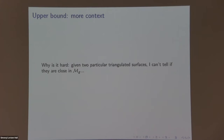Let me explain the main obstruction to proving any upper bound. Even now, if you give me two particular triangulations and ask me whether they are close in moduli space, I don't know the answer. This is similar to asking: if you have the combinatorial data associated to a Belyi map, can you tell if the underlying three-one surface is the same? That's in general kind of hard. Despite that, one can get upper bounds, and in the range where g tends to infinity these upper bounds are actually quite reasonable.